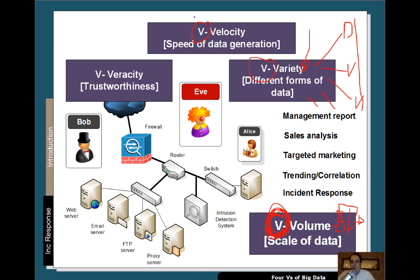Then we get velocity — the speed at which data is generated. Some alerts are generated fairly slowly, others come through fast, and we must be able to process the speed at which data is generated. Probably just as important is veracity — whether we can trust the data. Is it coming from a trustworthy source like one of our firewalls, or from an external source that might be spoofed? These are core to what we'll look at in terms of SIEM, data aggregation, and making sense of our logs.